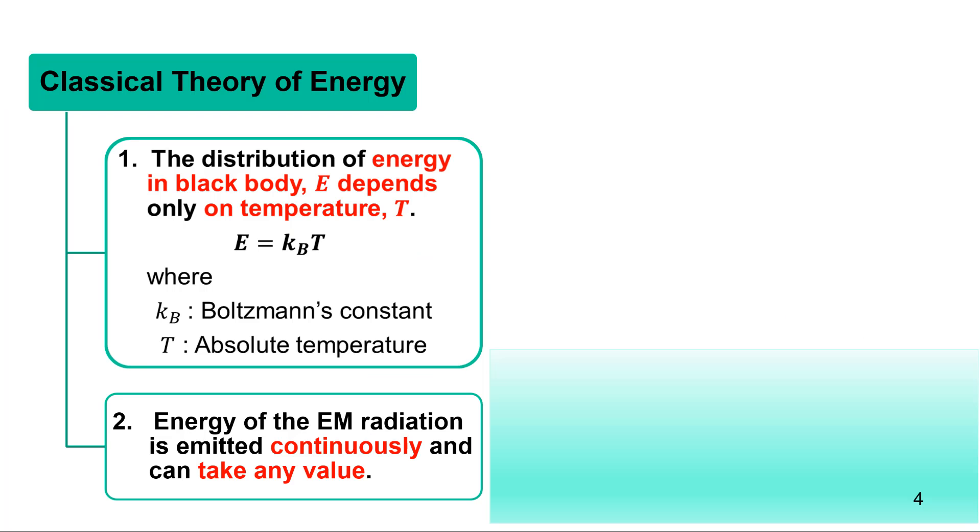In classical theory of energy, the distribution of energy E depends only on temperature, E equals to Kb times T. Kb is the Boltzmann constant and T is the absolute temperature. This kind of energy emitted continuously and can take up to any value.